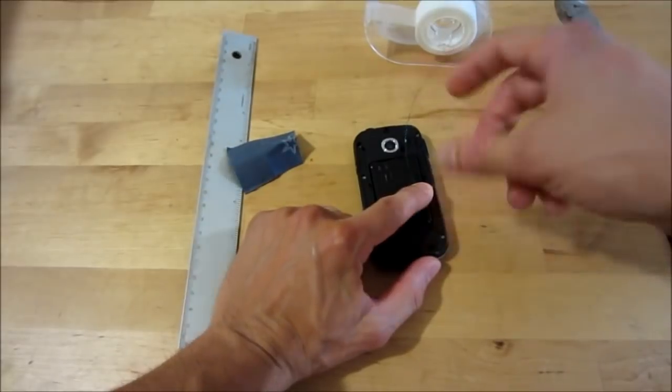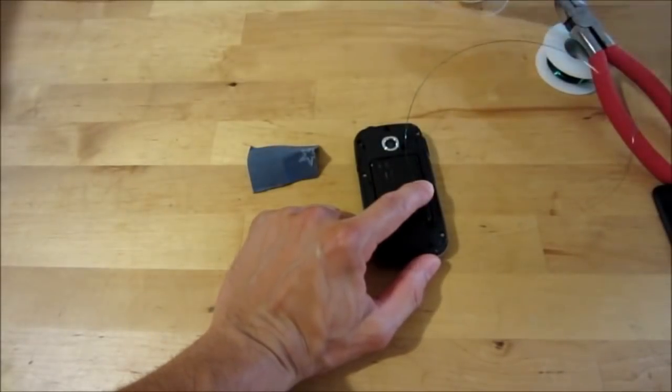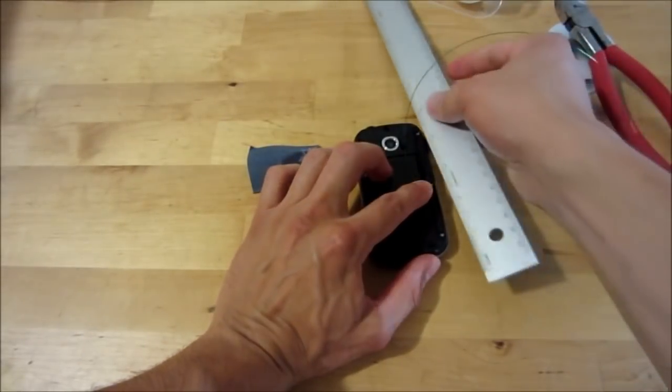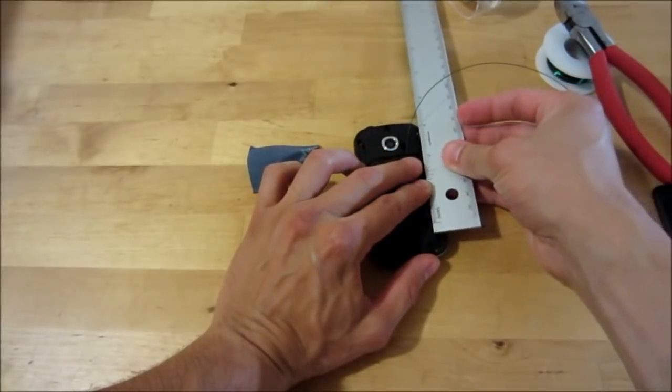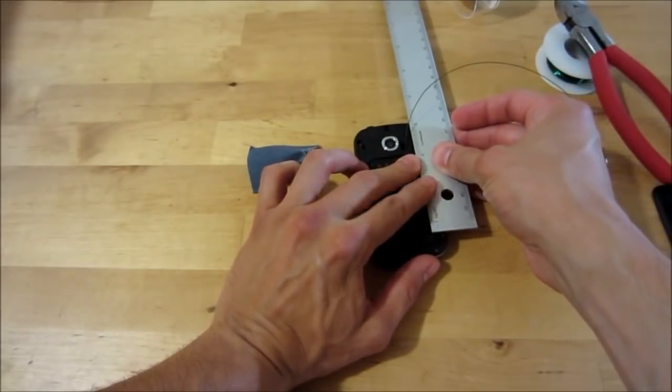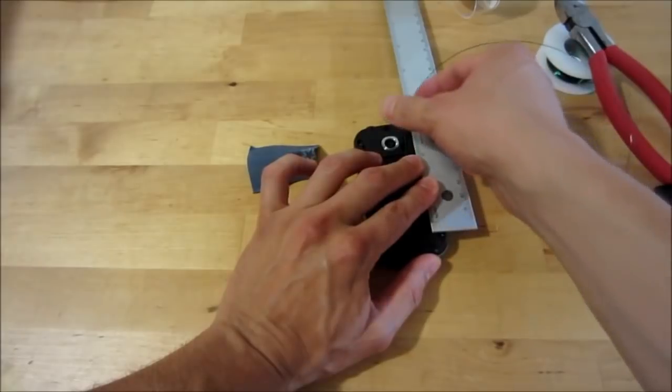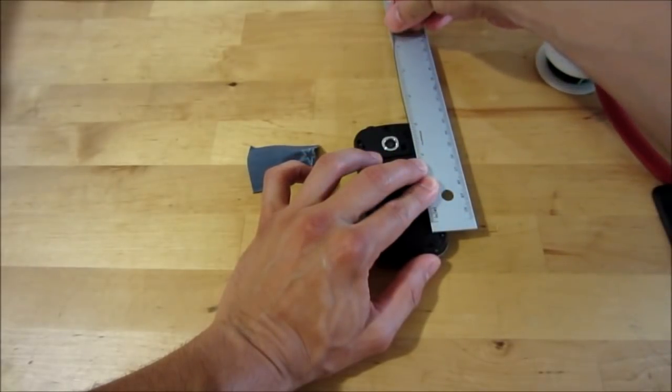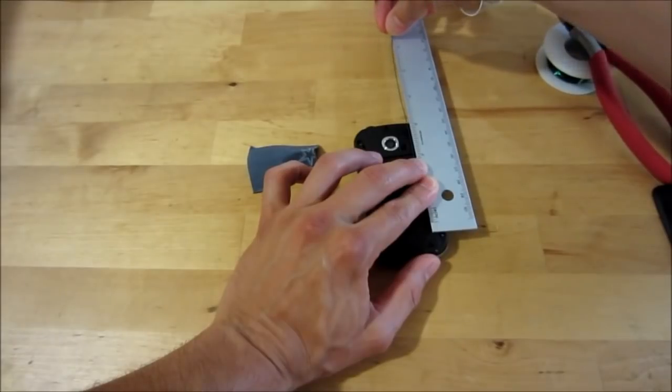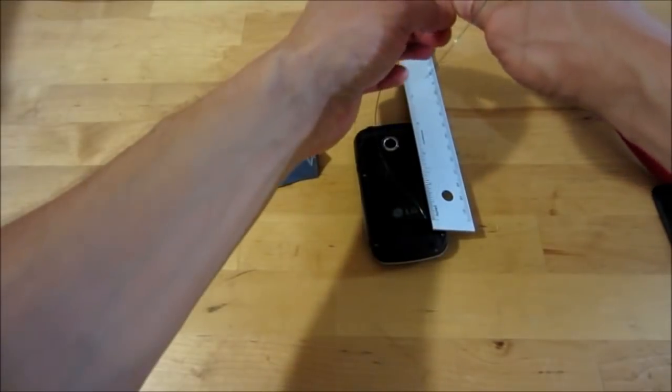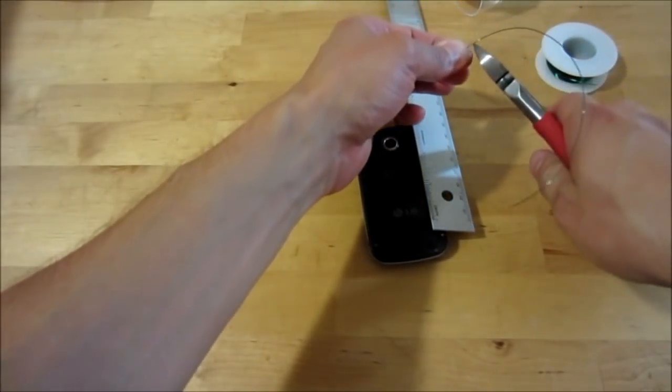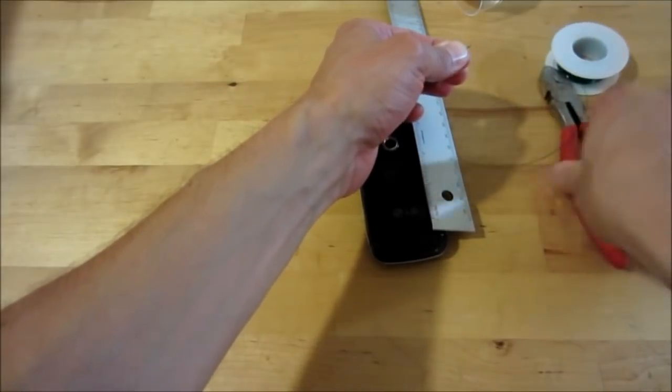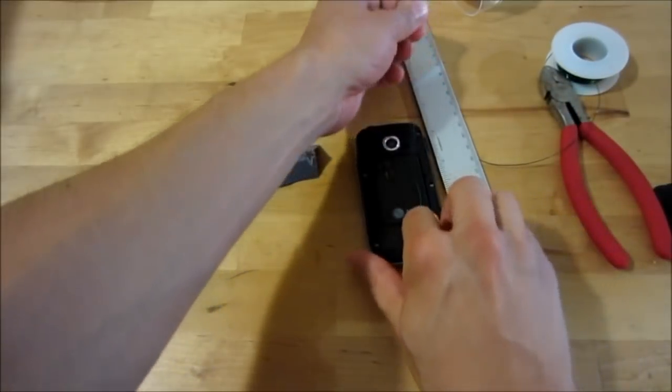Now I'm going to cut this to length. What I'm looking for is a length of about 6.3 inches. That corresponds to one quarter of a wavelength of what the cell phone will receive signals on. I'll just cut that to length.